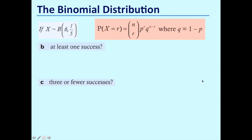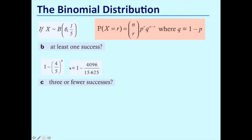Part B: at least one success. The old school way is to say that at least one success is the same as one minus no successes. The probability of getting no successes is going to be four-fifths to the power of six, so we do one minus that, which gives us 0.738.